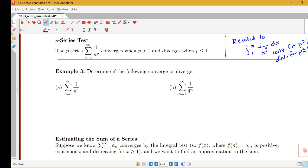We have the sum from n equals 1 to infinity of 1 over n to the fourth and the sum from n equals 1 to infinity of 1 over 4 to the n. So notice that this first one here is a p-series. A p-series has n raised to some number.